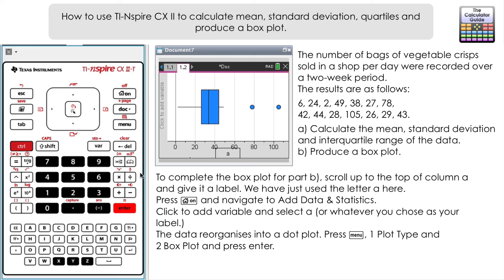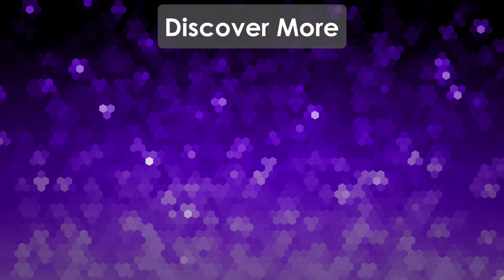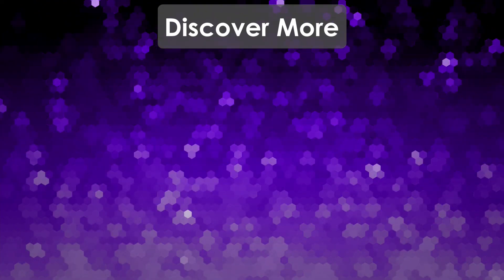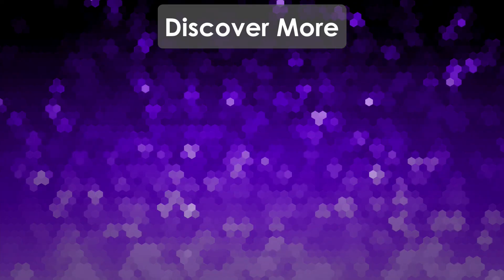The calculator has put those in as outliers. There we go—how we can produce summary statistics including mean, standard deviation, and interquartile range using a list of values, and also produce a box plot as well on the TI-Nspire CX2. That's it for this video. Don't forget to like and subscribe for future videos. Thank you very much for watching and I will see you next time on the Calculator Guide.